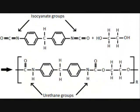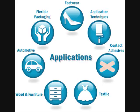Polyurethane is a chain of monomers joined by urethane links. It is used in sealants, spandex, foams, and skateboard wheels.